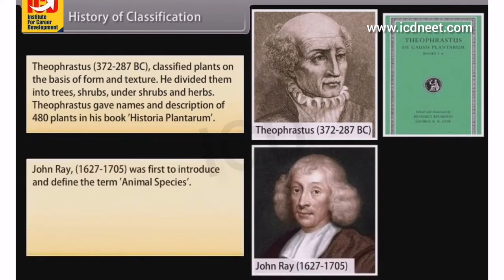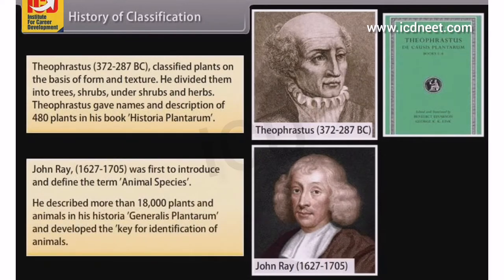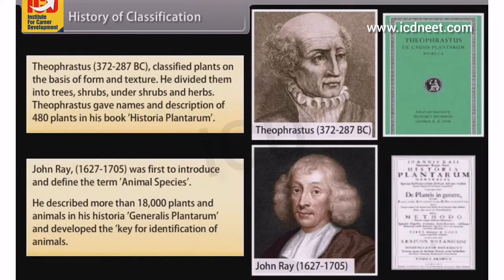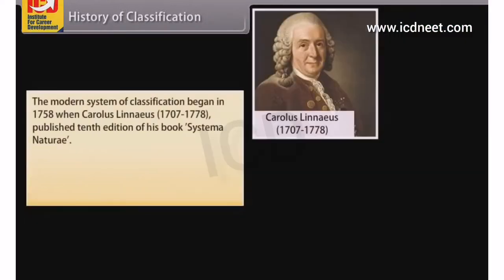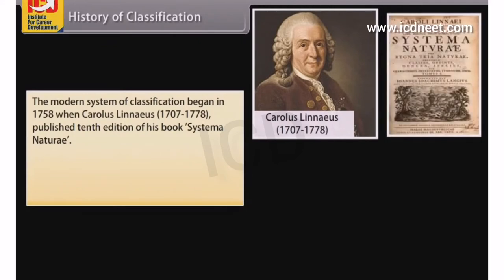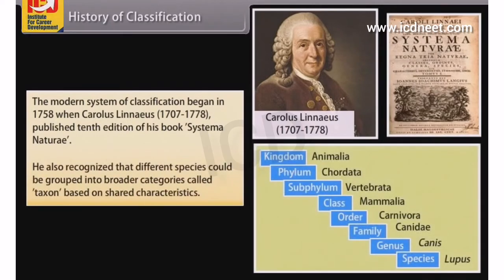John Ray (1627–1705) was the first to introduce and define the term animal species. He described more than 18,000 plants and animals in his Historia Generalis Plantarum and developed a key for identification of animals. The modern system of classification began in 1758 when Carolus Linnaeus (1707–1778) published the 10th edition of his book Systema Naturae. He recognized that different species could be grouped into broader categories called taxon, based on shared characteristics.